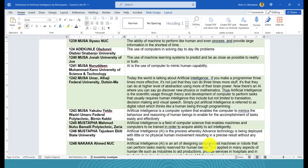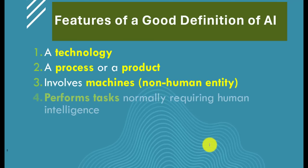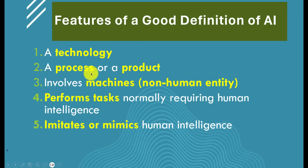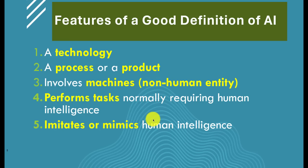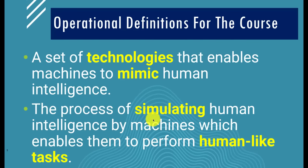Let's look at what we can regard as pillars of a definition of artificial intelligence. I've labeled these 'features of a good definition of AI.' The words highlighted in yellow are the pillars you need. AI can be described as a technology, a process, or a product. It involves machines — non-human entities. It must perform tasks normally requiring human intelligence and imitate or mimic human intelligence.